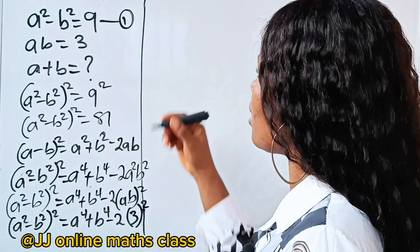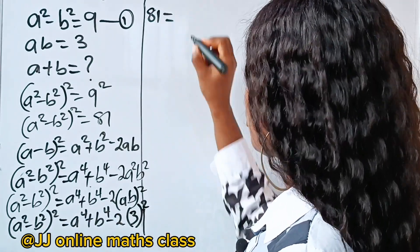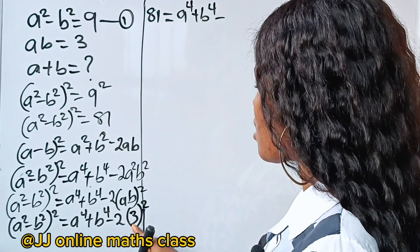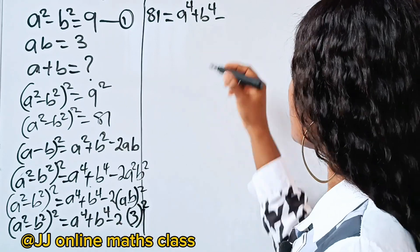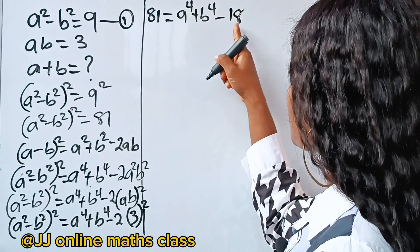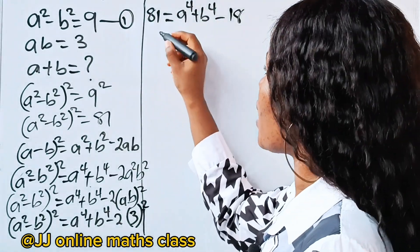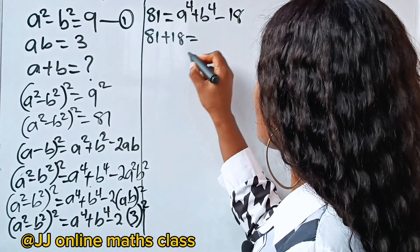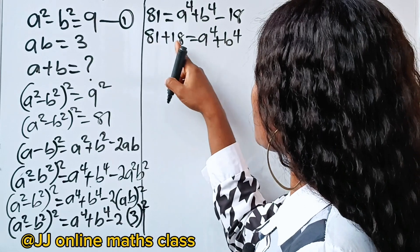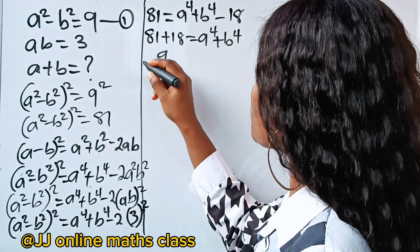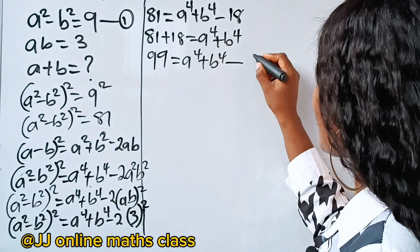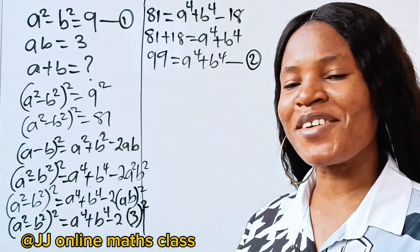So let's substitute that here. We have that 81 is equal to a to the power of 4 plus b to the power of 4 minus 2 times (ab) squared. Now ab is 3, so 3 squared is 9, and 9 times 2 is 18. So this minus 18 crosses the equation side to become plus 18: 81 plus 18 is equal to a to the power of 4 plus b to the power of 4. That gives us 99 equals a to the power of 4 plus b to the power of 4. Let's call this equation 2.